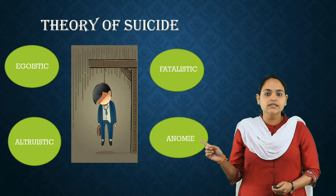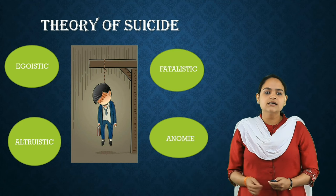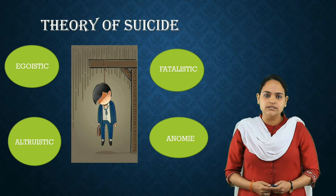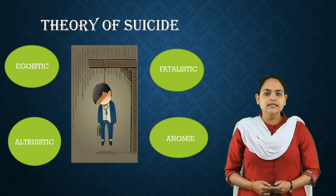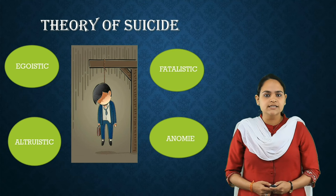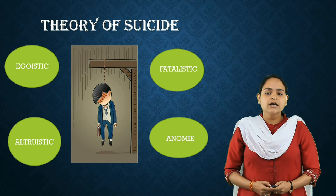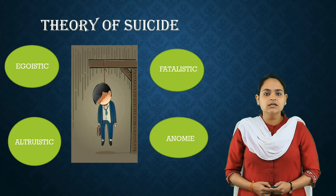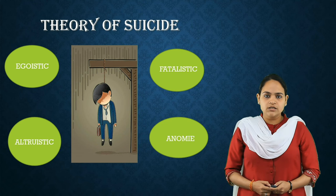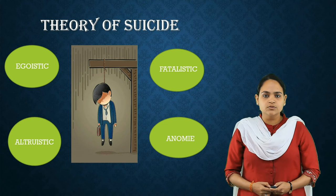Anomic suicide, on the other hand, is the result of lack of regulation, creating a sense of confusion and disconnection from society. Anomie occurs during periods of economic and social upheaval.